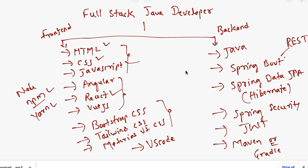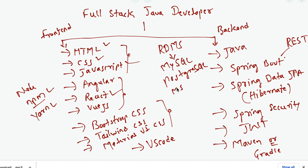Apart from front end and back end technologies, a full stack Java developer also has to know databases. For RDBMS databases, for example MySQL, MS SQL Server, PostgreSQL, or Oracle — a full stack Java developer should know about these popular databases.